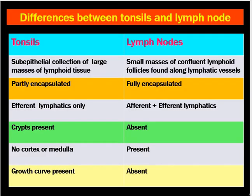Now let's discuss the differences between tonsils and lymph nodes — this is very important and may be asked in exams. Tonsils are defined as subepithelial collections of large masses of lymphoid tissue, whereas lymph nodes are small masses of confluent lymphoid follicles found along lymphatic vessels. Tonsils are present on the lateral wall of the oropharynx and are partly encapsulated — the medial end is not encapsulated so that antigens can enter and initiate primary immunity. Lymph nodes are fully encapsulated. Tonsils are the first line of defense — the policemen of the throat.